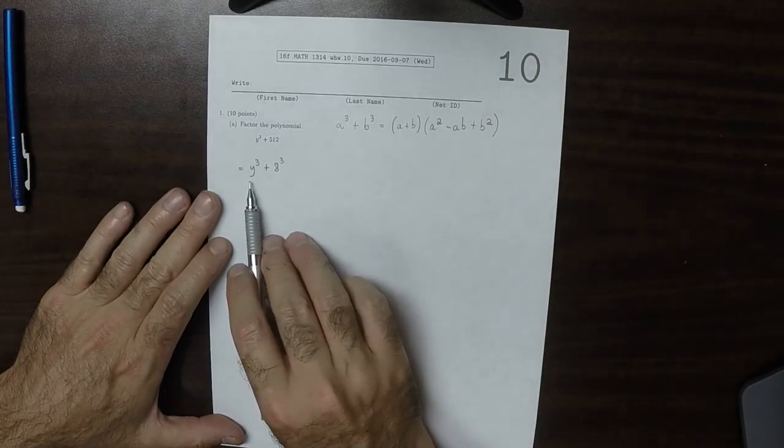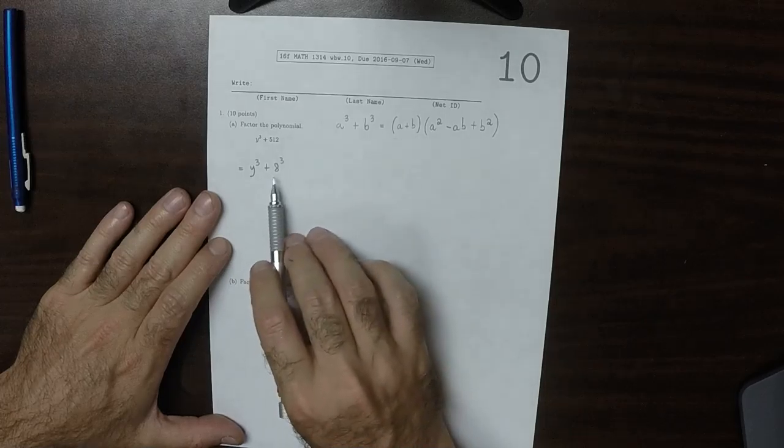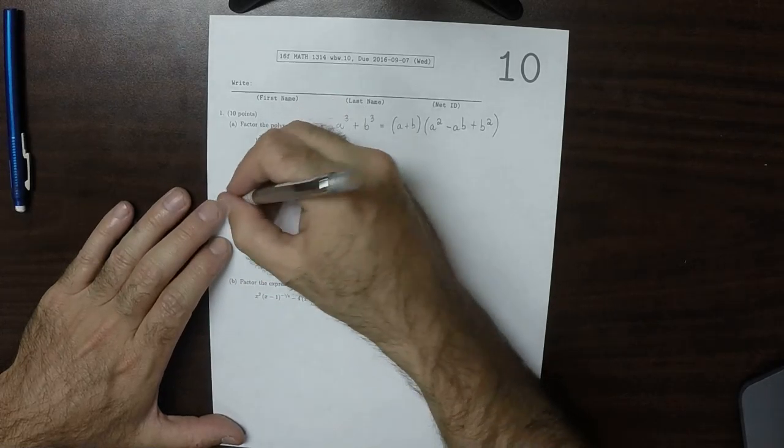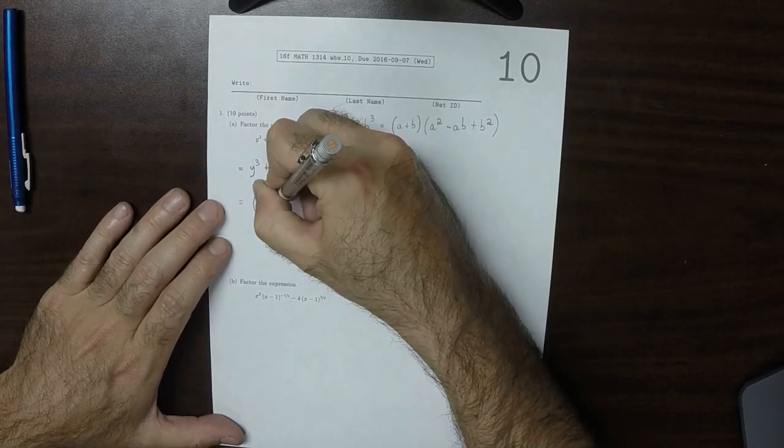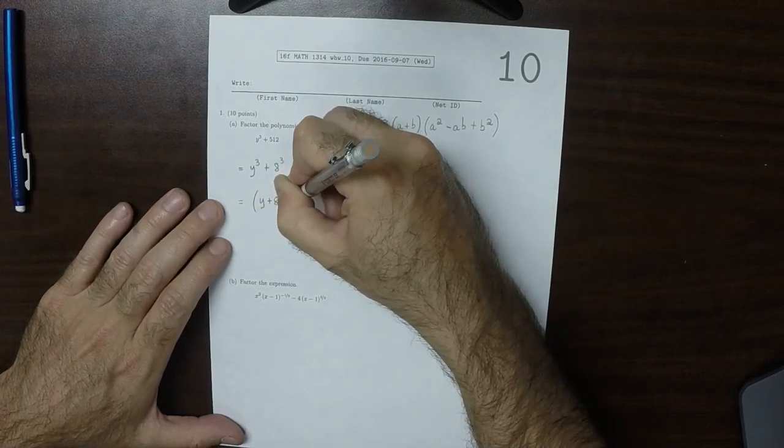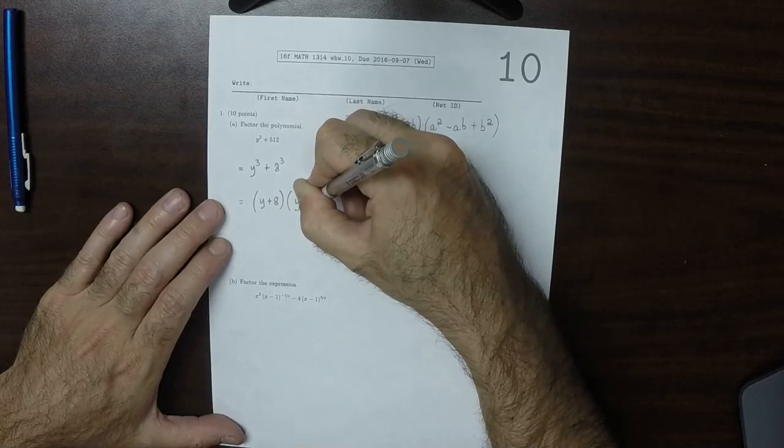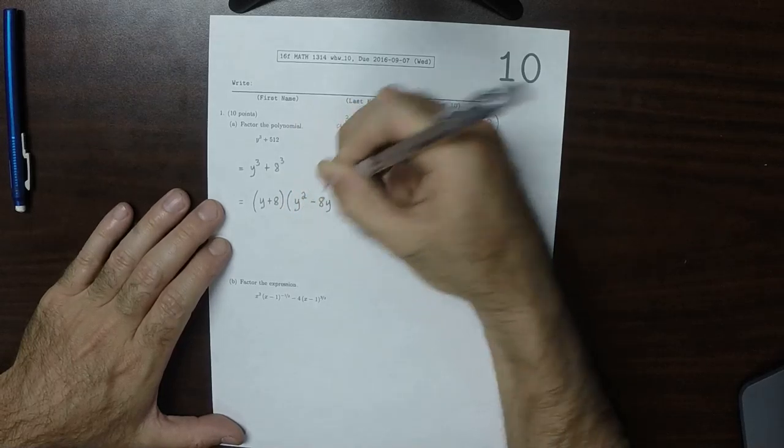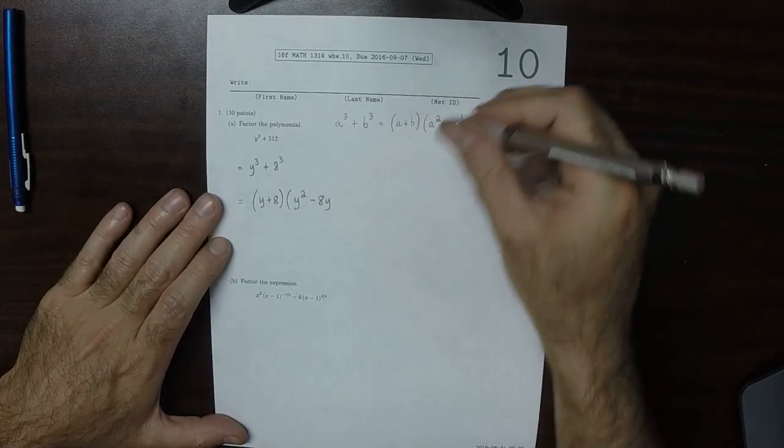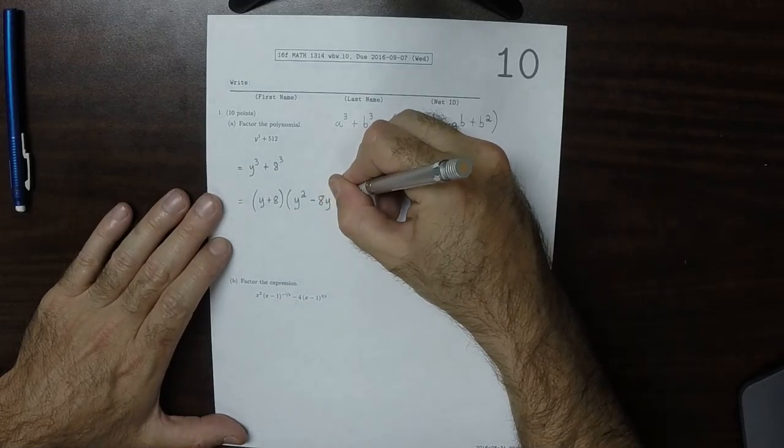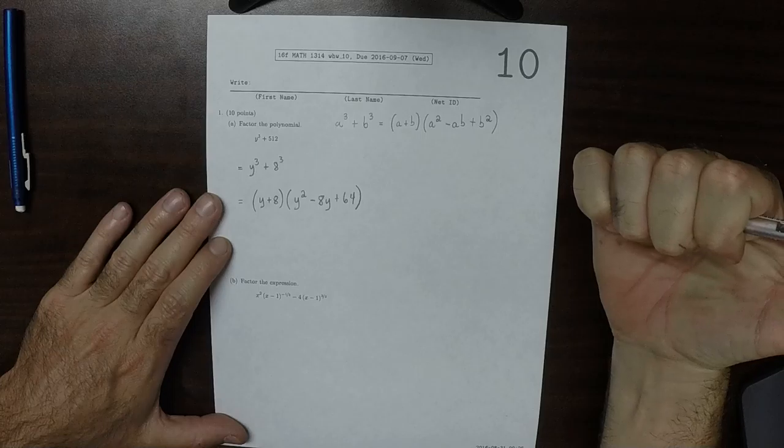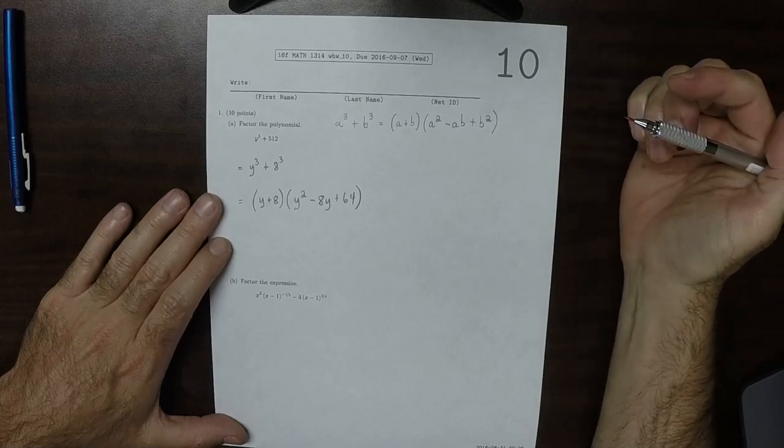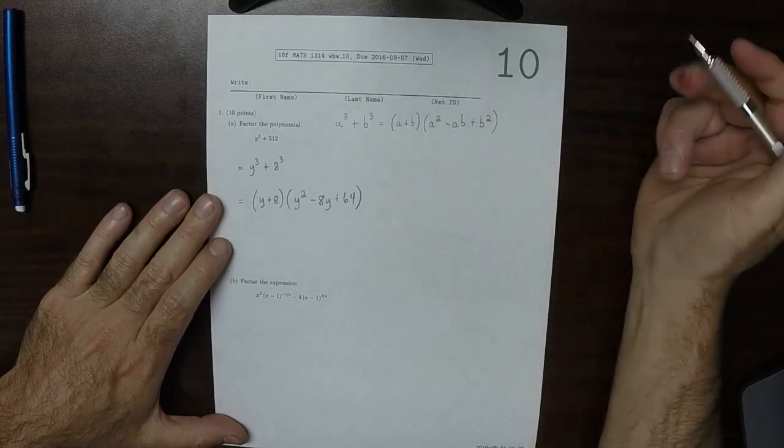So y is a and 8 is b. This factors as (y plus 8) multiplied by (y² minus 8y plus 64), and this factors no further.